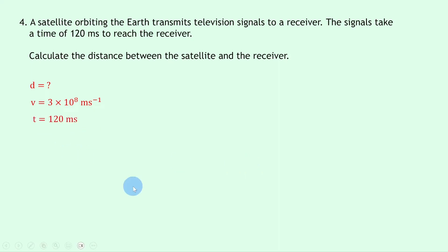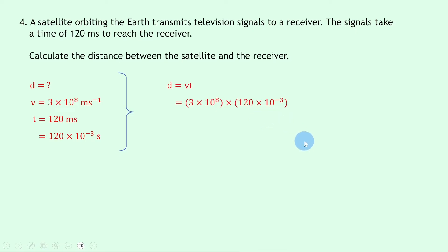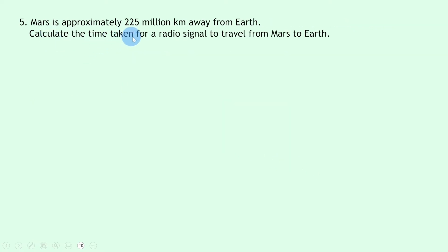The time t is 120 milliseconds, which we convert to seconds: 120 × 10⁻³ seconds. Writing down the equation relating distance, speed, and time: d = vt. Substituting in the numbers gives 3 × 10⁸ × 120 × 10⁻³, and putting that into your calculator should give an answer of 3.6 × 10⁷ meters.